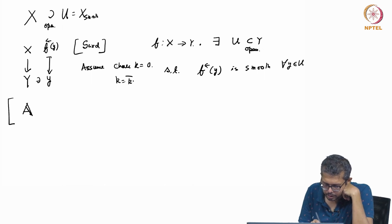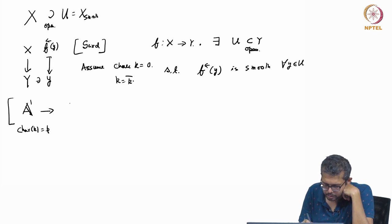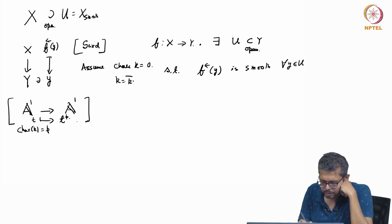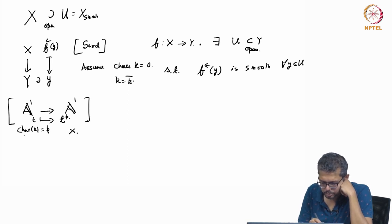This is only true for characteristic 0. In characteristic p, this is not true. If you consider t going to t to the power p, this is a counterexample — it is not a smooth map. Sard's theorem does not hold here.